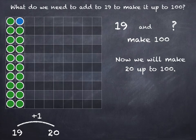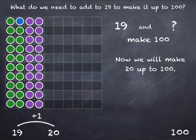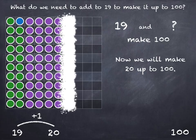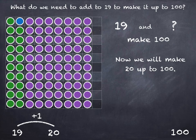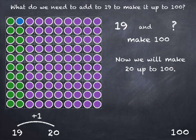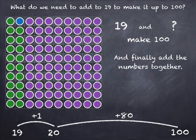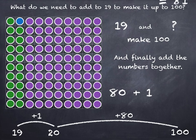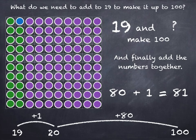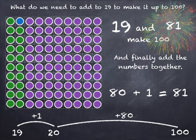And then we're going to go from 20 to 100 in tens. How many tens will we need? That was 8 tens, which is 80. So 20 plus 80 takes us to 100. What did we add on all together? We added on 80 and we added on 1, so that's 81. So 19 and 81 make 100.